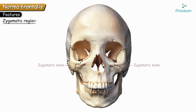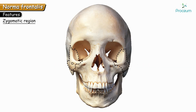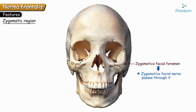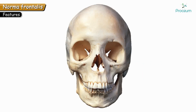The next region is the zygomatic region, which forms the cheeks and is also called the cheek bone. It is marked by a small foramen over the zygomatic bone called the zygomaticofacial foramen, through which the zygomaticofacial nerve passes.